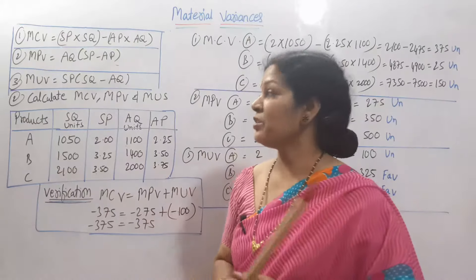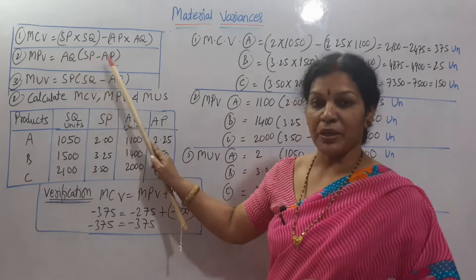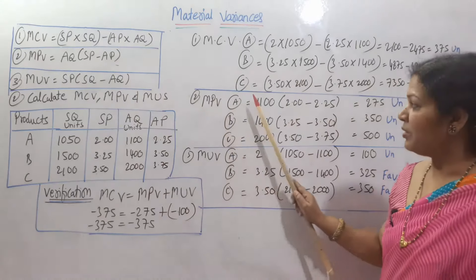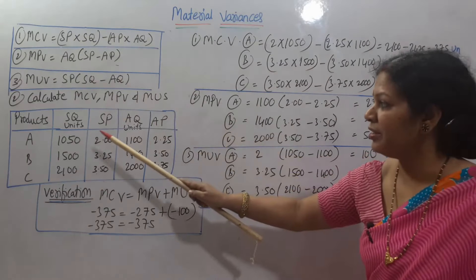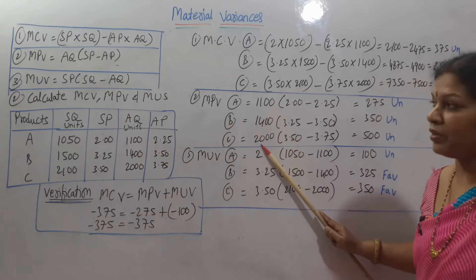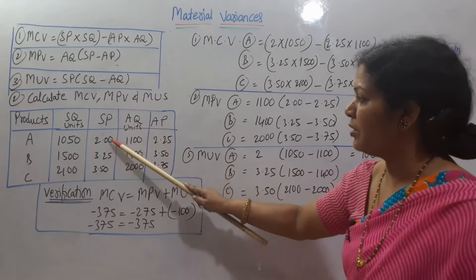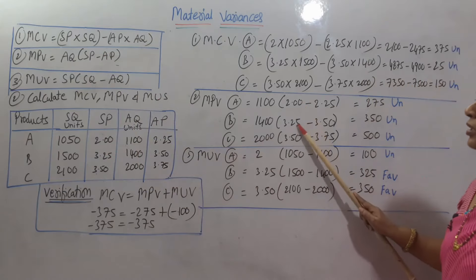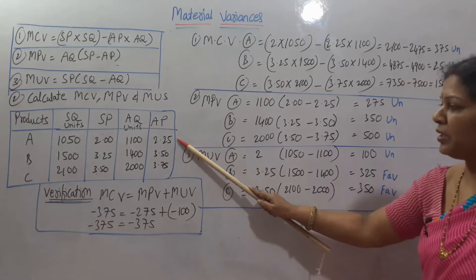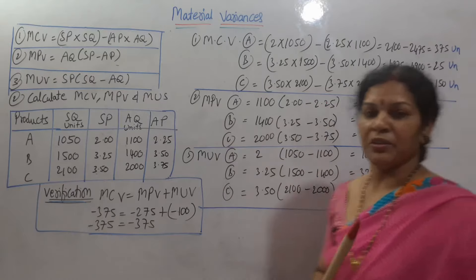In the same way, next, material price variance. Material price variance formula is: actual quantity into standard price minus actual price. Material price variance, I have written ABC. Actual quantity is 1100, 1400, 2000. Into SP minus AP. SP is 2, 3.25, and 3. AP is 2.25, 3.50, 3.75. We have put it in the formula.